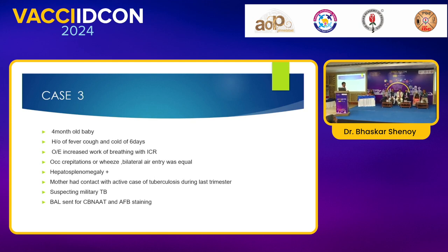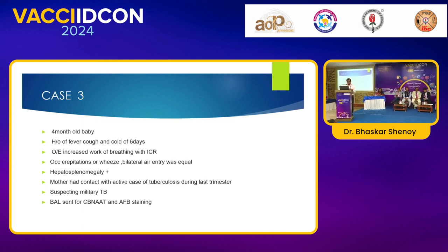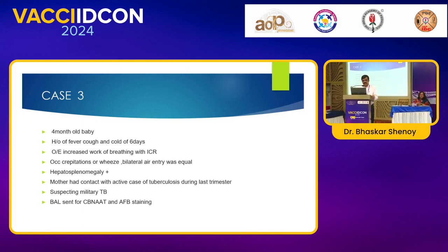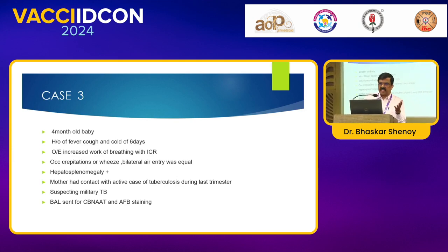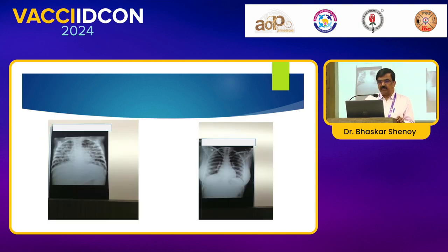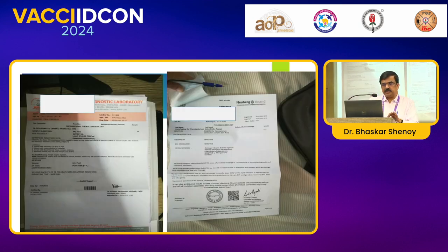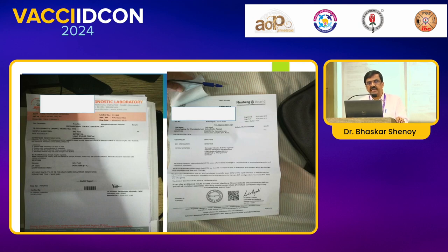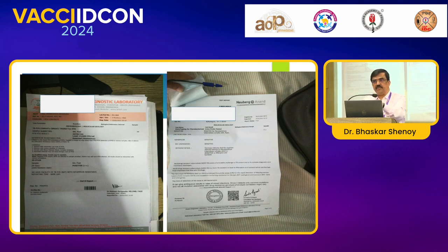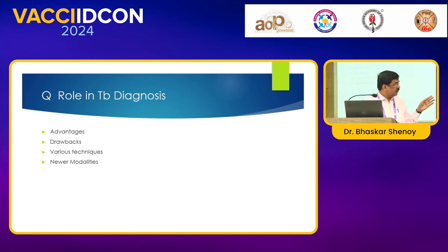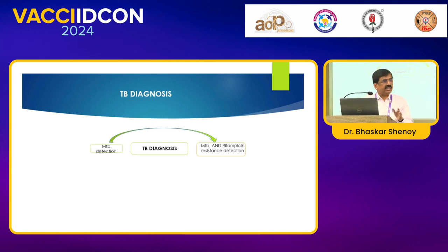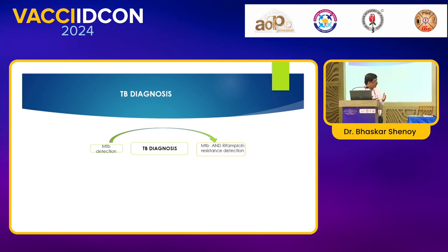Third case: a four-month-old with respiratory distress, hepatosplenomegaly — the mother had TB and we suspected miliary tuberculosis. As standard protocol we sent CBNAAT and AFB for staining. We diagnosed miliary tuberculosis and sent a GeneXpert wherein the BAL was taken — AFB was positive and CBNAAT was positive. LPA was also sent. GeneXpert showed rifampicin resistance. The LPA showed rifampicin sensitive. So what are the advantages of PCR in TB diagnosis?